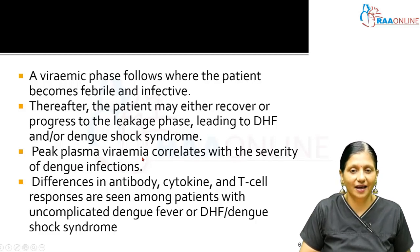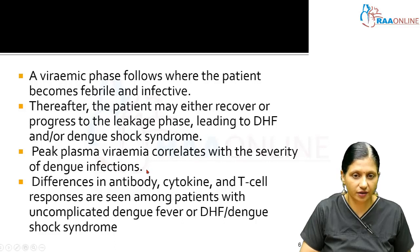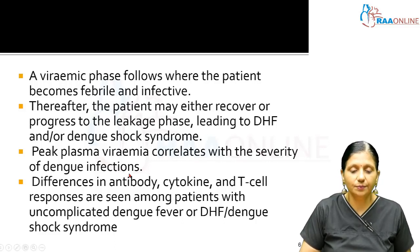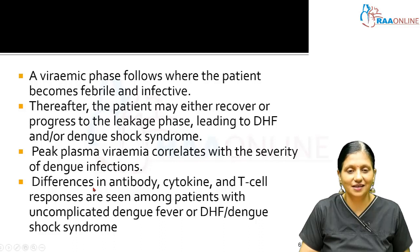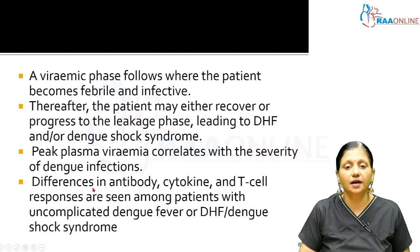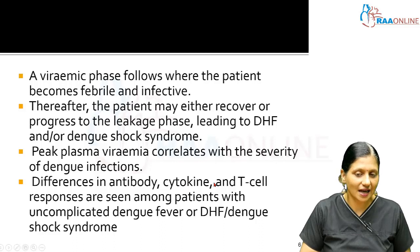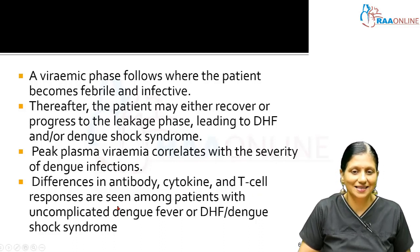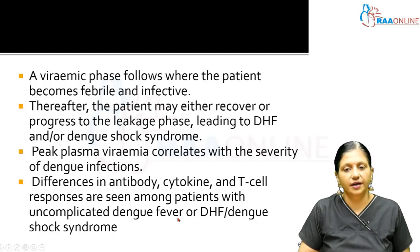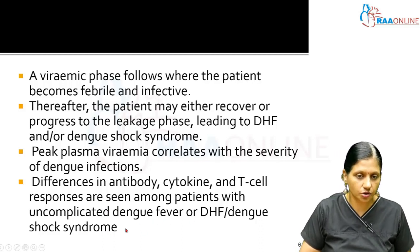Peak plasma viremia correlates with the severity of Dengue infections, and individuals respond differently. These differences are due to variations in antibody levels, cytokine activation, and T cell responses, as seen among patients with uncomplicated Dengue, Dengue hemorrhagic fever, or Dengue shock syndrome.